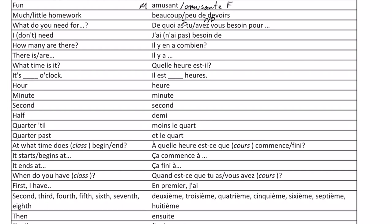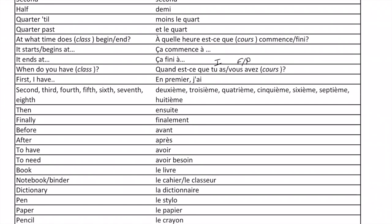'Quand est-ce que tu as' — again, informal — or 'quand est-ce que vous avez' — that is your formal or plural — and then you put the name of your course. 'En premier, j'ai...' Then we have our ordinal numbers: 'deuxième, troisième, quatrième, cinquième, sixième, septième, huitième,' which you should remember from our number worksheet.